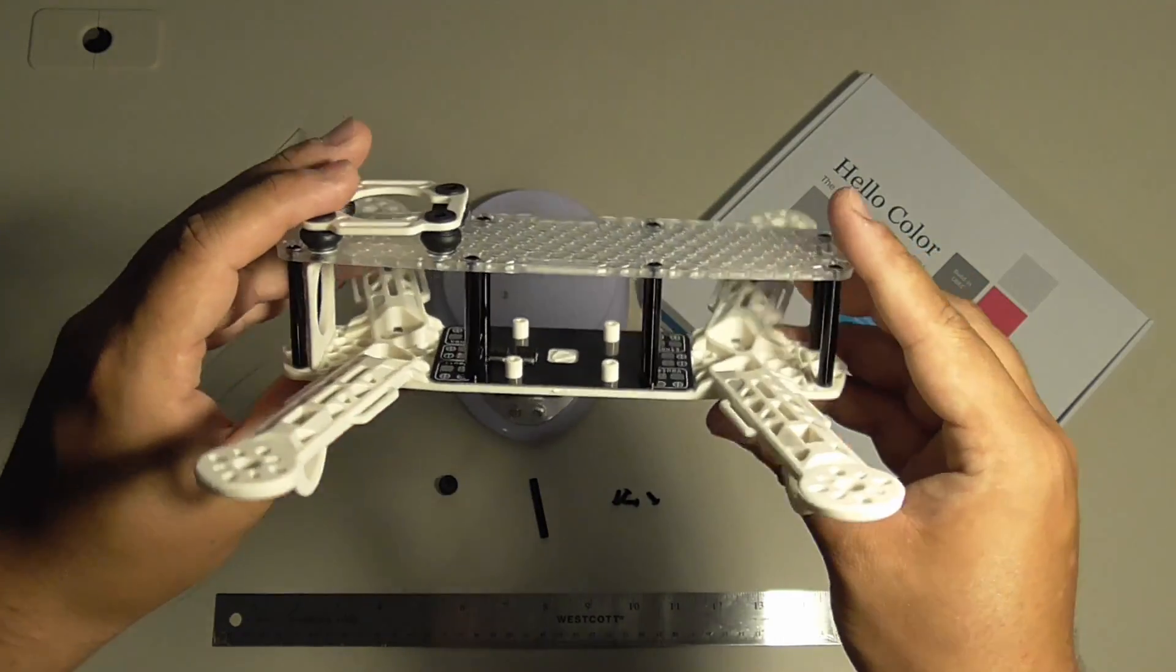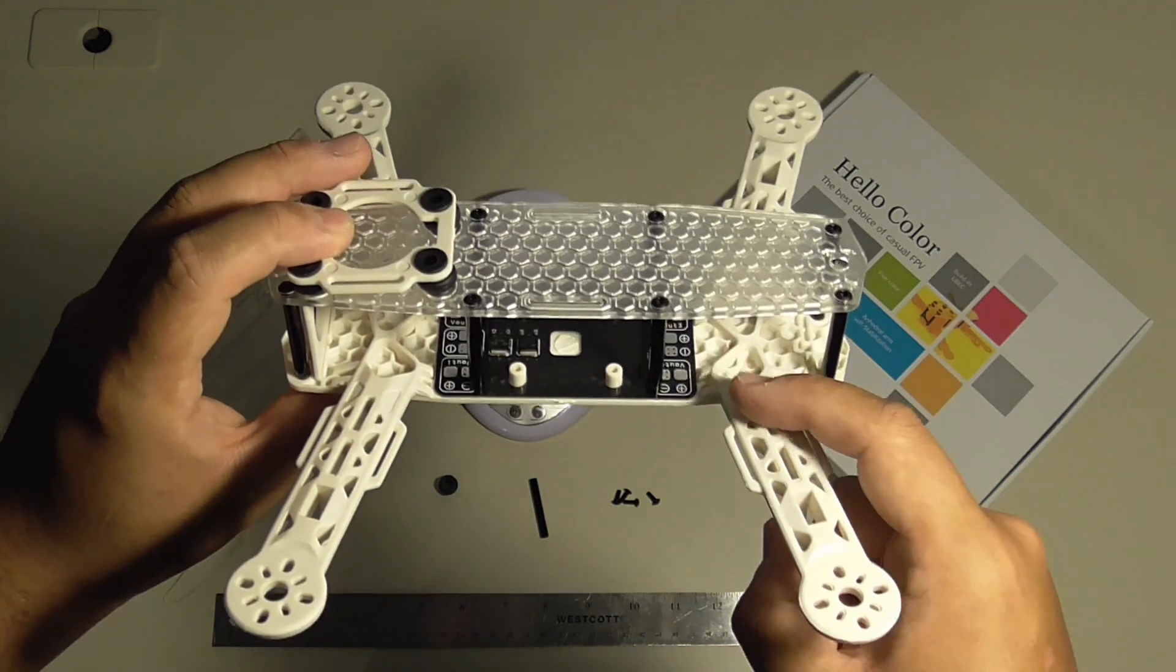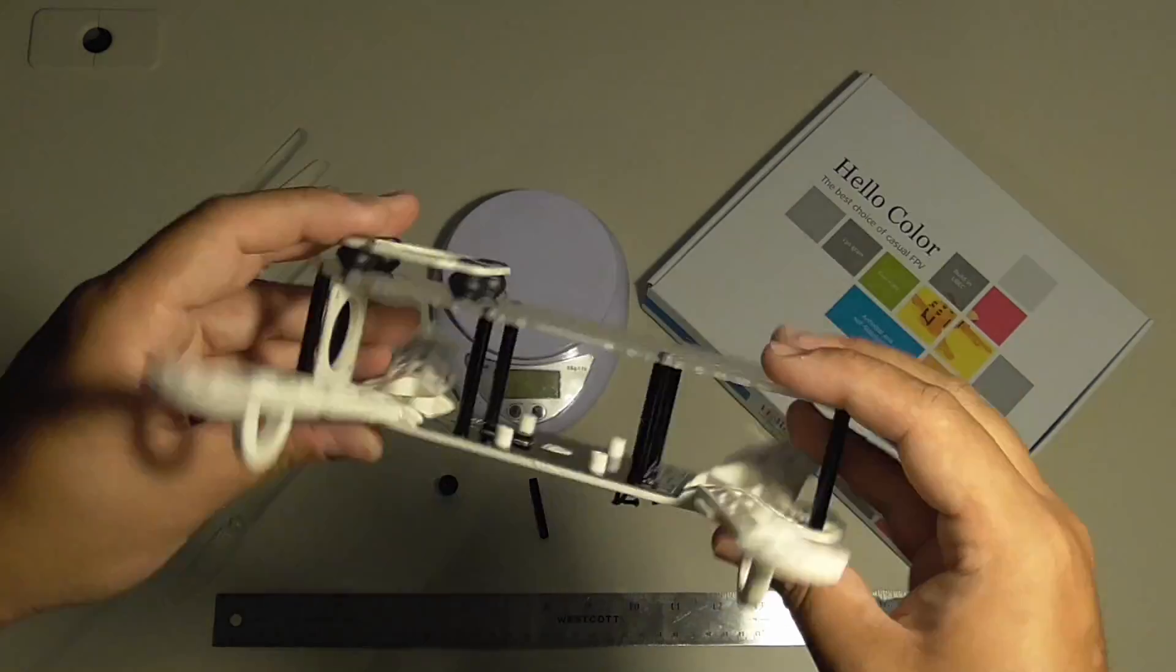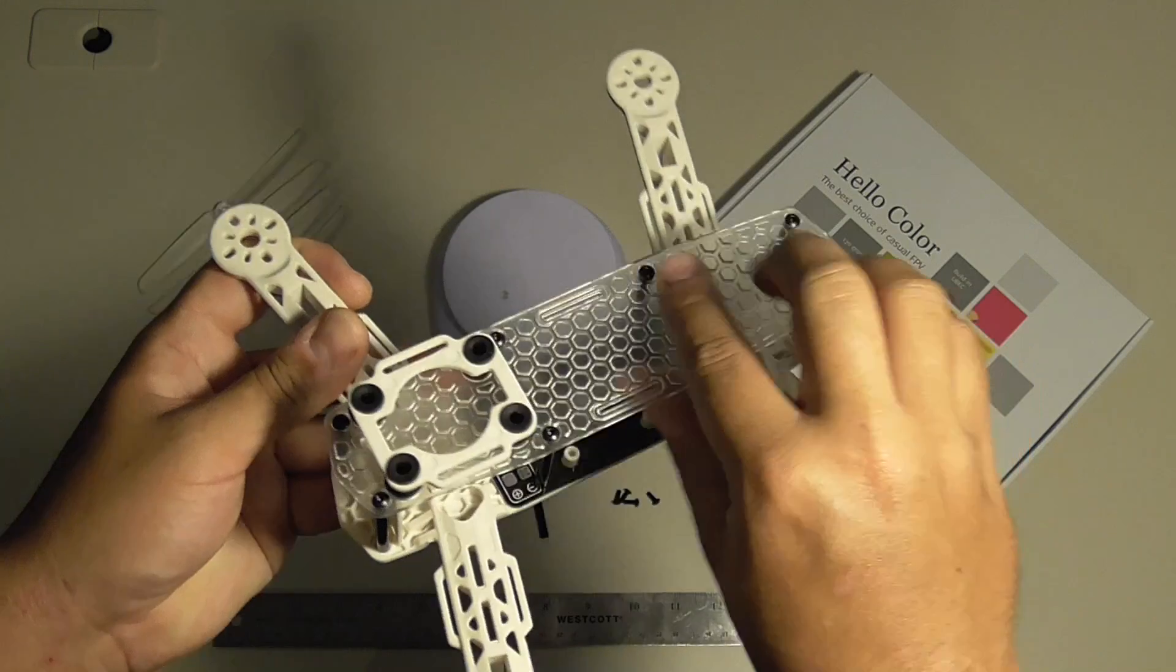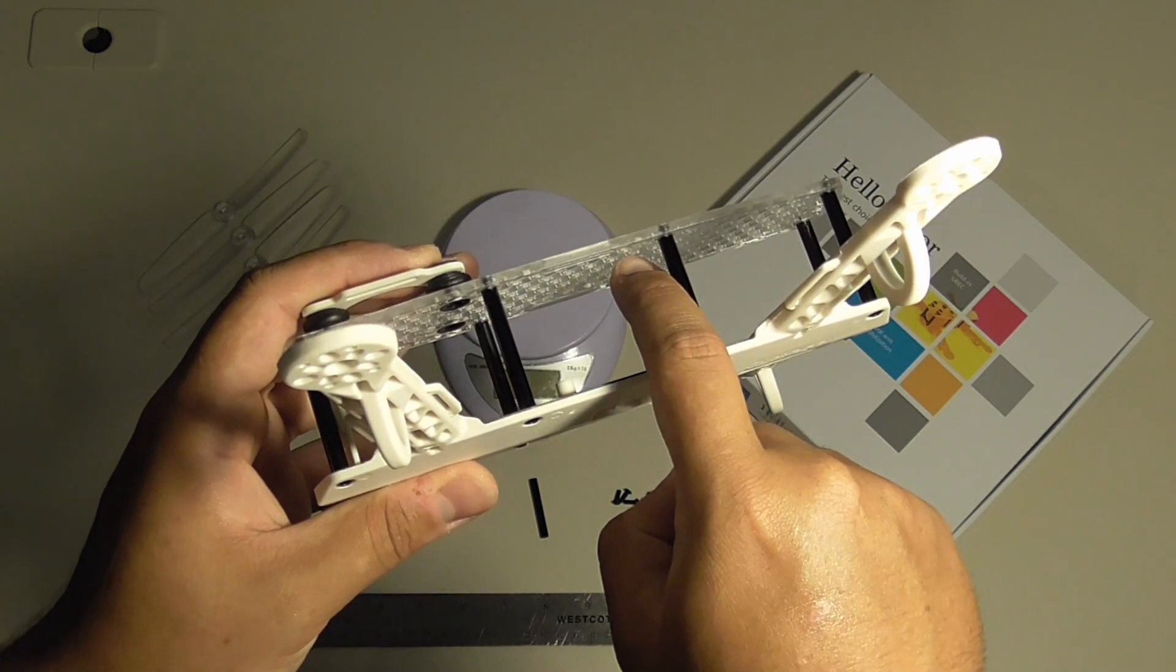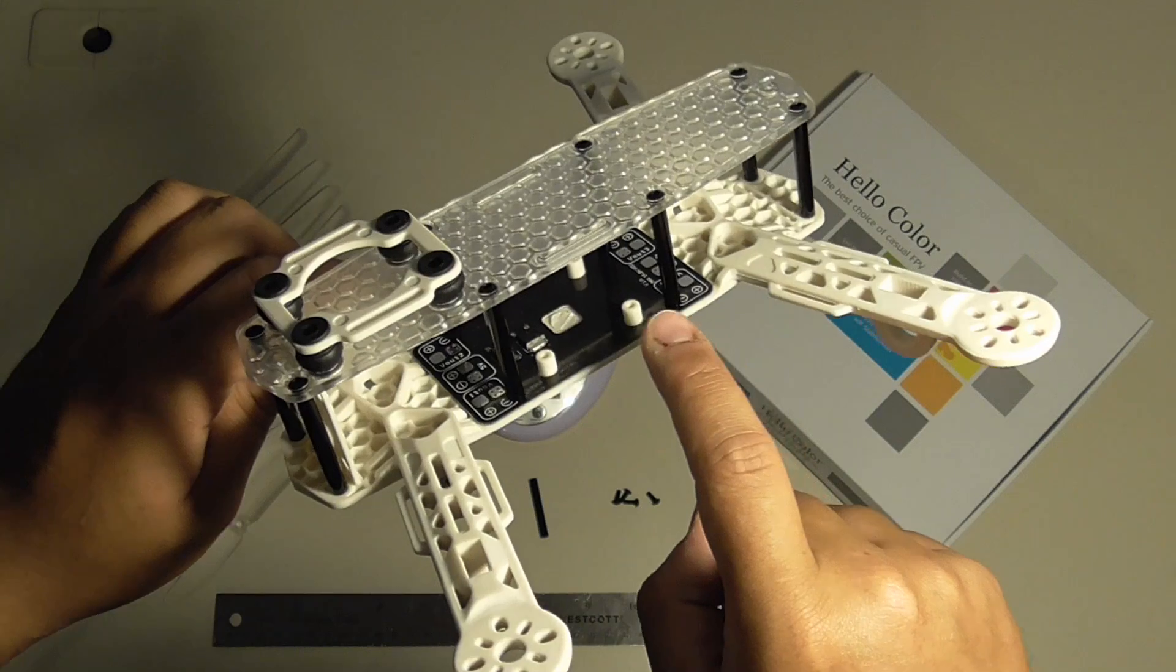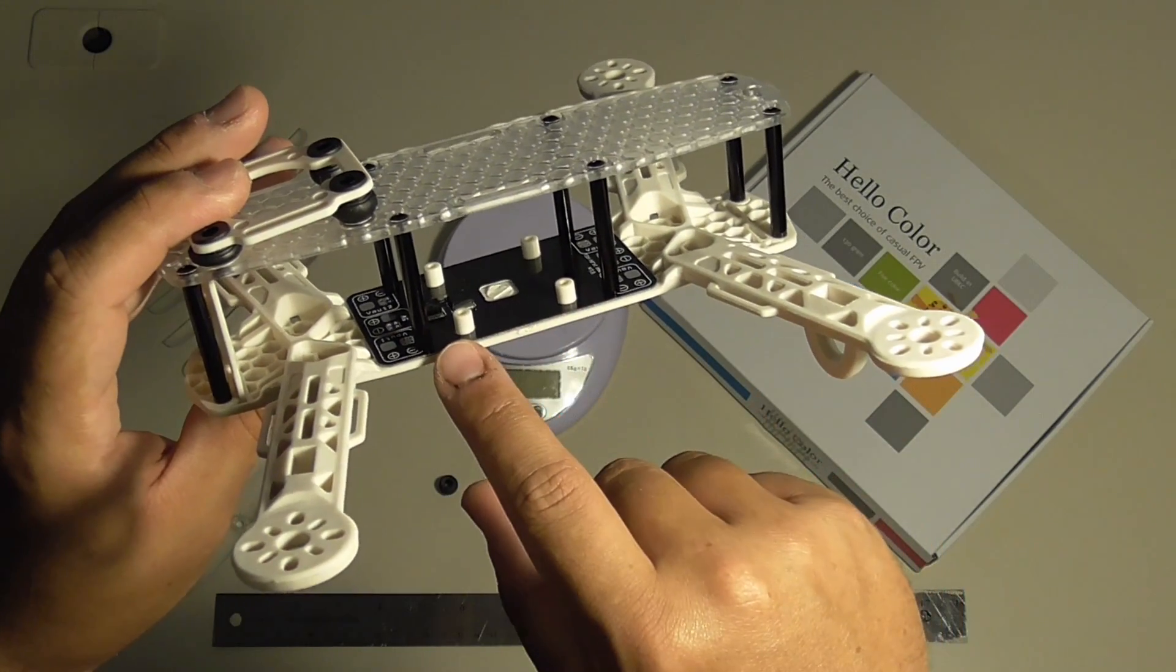The frame consists of a main base plate with the arms molded in. The arms also have the landing skids molded in. The top plate has a smooth glossy finish on top and a honeycomb finish on the inner side. There's also a honeycomb finish on the inner side of the main base plate, and that continues underneath the power distribution board.